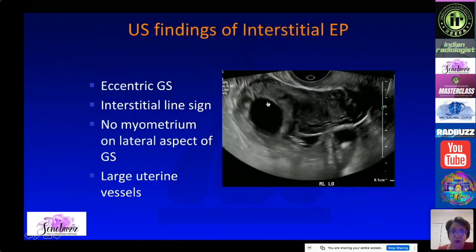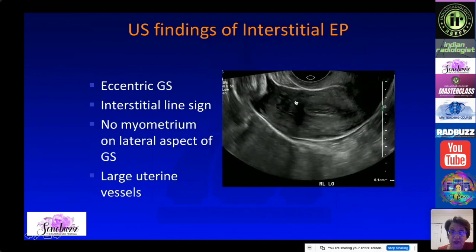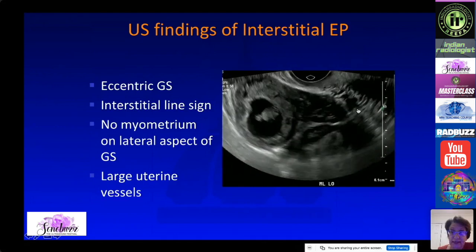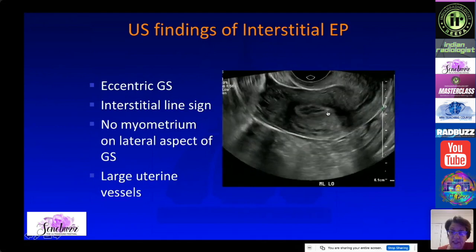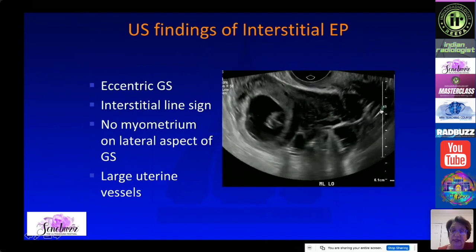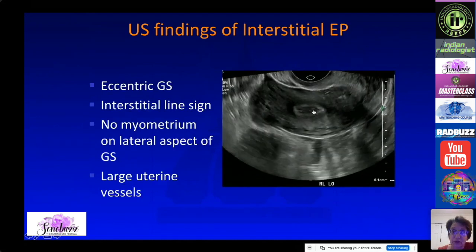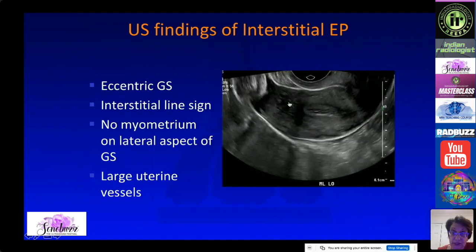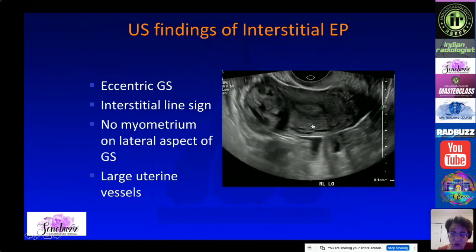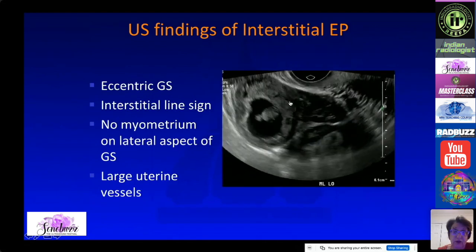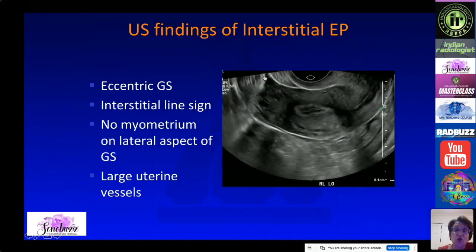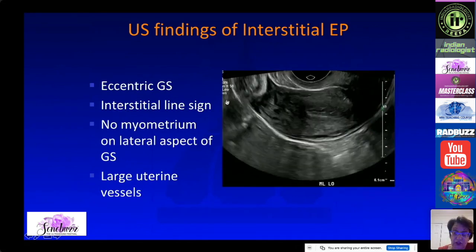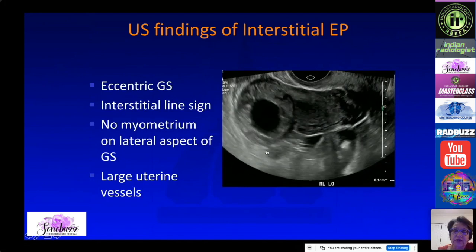The key findings are an eccentric gestational sac and the interstitial line sign — you can see the endometrium extending as a line toward the gestational sac at the cornual portion. There is no myometrium on the lateral aspect of the gestational sac, and you can see very large uterine vessels in this area.